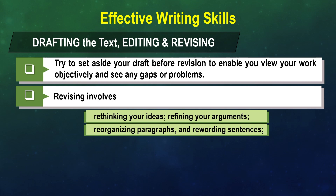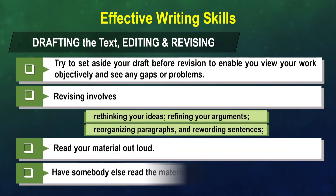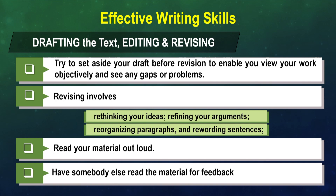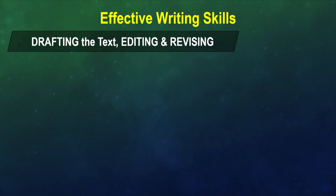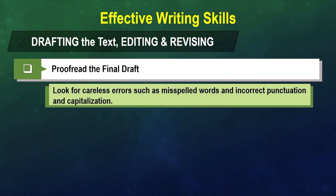Another technique is reading your material out loud. In this way, you can identify writing which is awkward or unclear. Or you can request a colleague to read the material and obtain valuable feedback from them. When proofreading the final draft, look for careless errors such as misspelled words, incorrect punctuation, and capitalization.